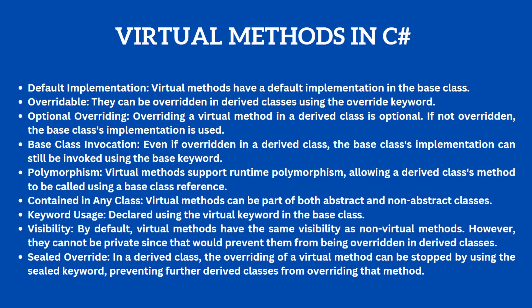By default, virtual methods have the same visibility as non-virtual methods. However, they cannot be private, since that would prevent them from being overridden in the derived class. In a derived class, the overriding of a virtual method can be stopped by using the sealed keyword, which prevents further derived classes from overriding that method.